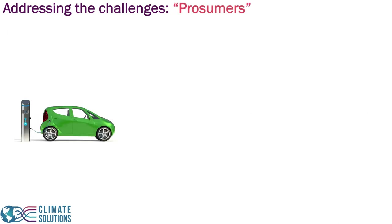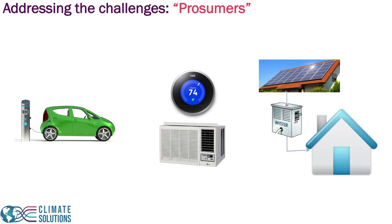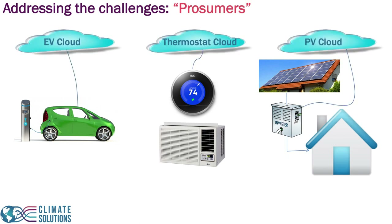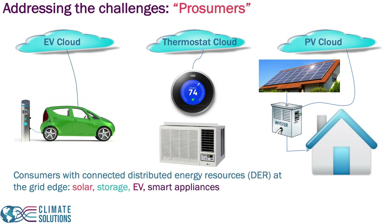But this landscape is changing significantly. Because of the adoption of electric vehicles, we also have the adoption of smart appliances — the appliance itself can have intelligence, for example, your smart thermostat. Customers are now not just consuming electricity but can also potentially generate electricity, and all of these technologies are connected to the cloud. We now have a collection of consumers with connected distributed energy resources at the grid edge, including solar, storage, EVs, and smart appliances.